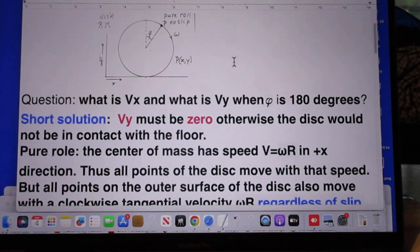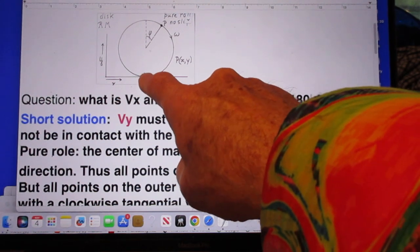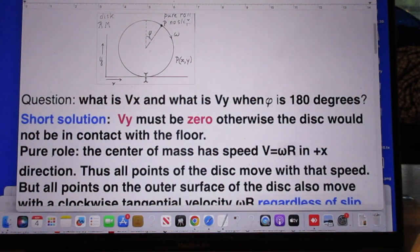And the question now is, what is Vx and what is Vy when the angle phi is 180 degrees? In other words, when P is here at the bottom, P is in contact with the surface. So what I'm basically saying, at any point in time, what is the velocity of this point here, the point of contact in the x and in the y direction? And this is my y-axis coordinate system.